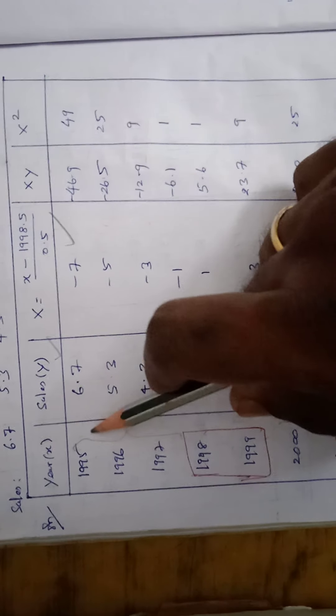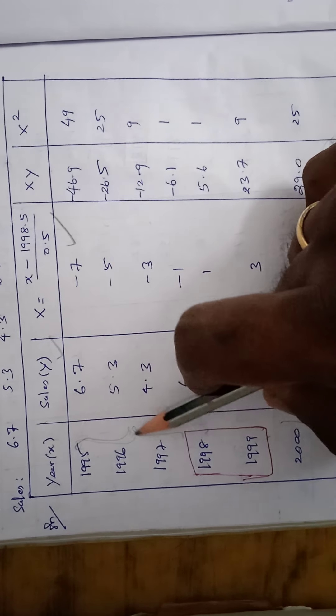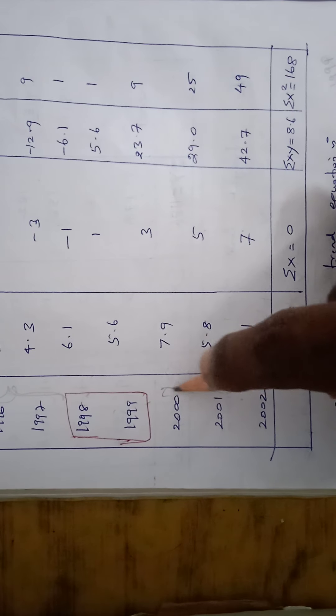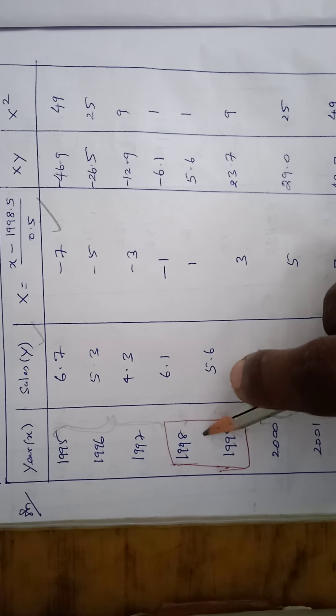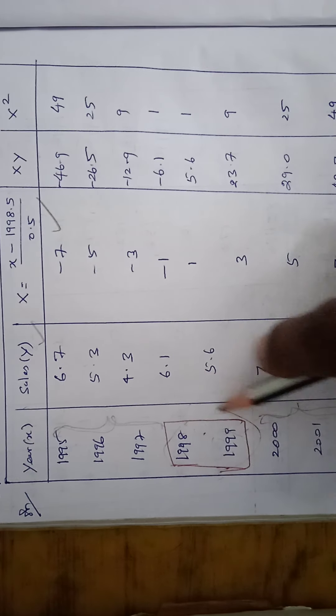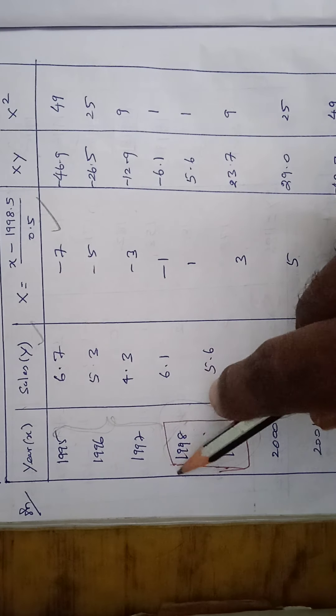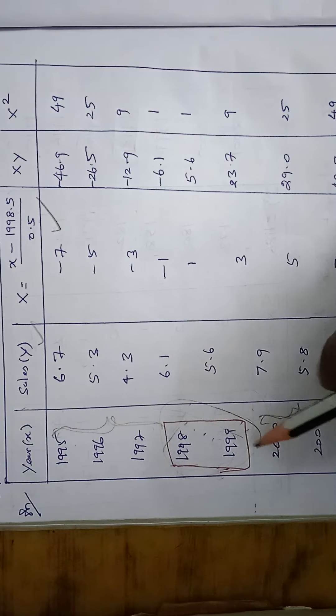So first we have to take first 3 years and select last 3 years. Both are same. So the remaining 2 years are there. So we have to compute the middle term of the result.